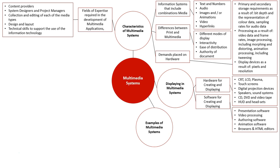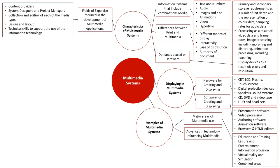The next area we look at are examples of multimedia systems. We have the major areas of multimedia use, and then due to advances in technology, influences on multimedia. The major areas include education and training — which is obviously what we're doing right here, using multimedia to train and educate people in multimedia systems. Leisure and entertainment would be where a lot of our gaming, movies, and recreational activities are. Information provisions — think about kiosk setups at events or shopping centers that allow you to look for certain stores and provide information about the area so you can navigate your way around.